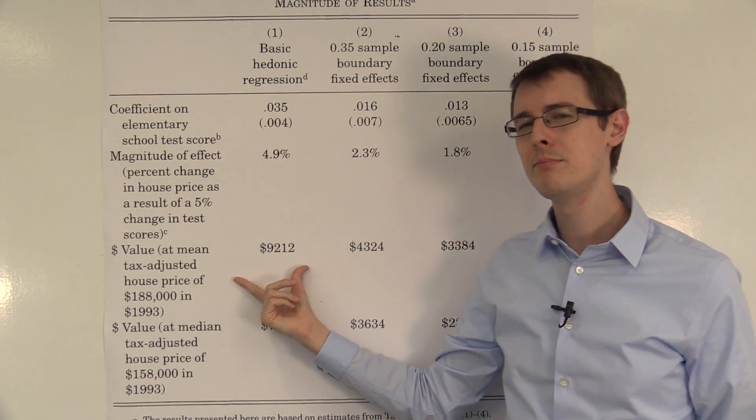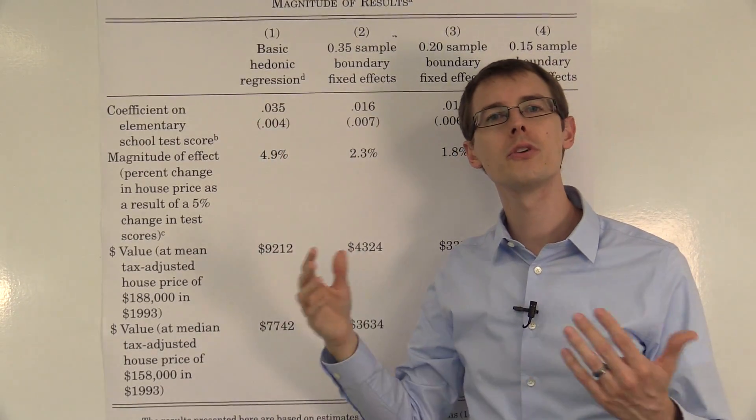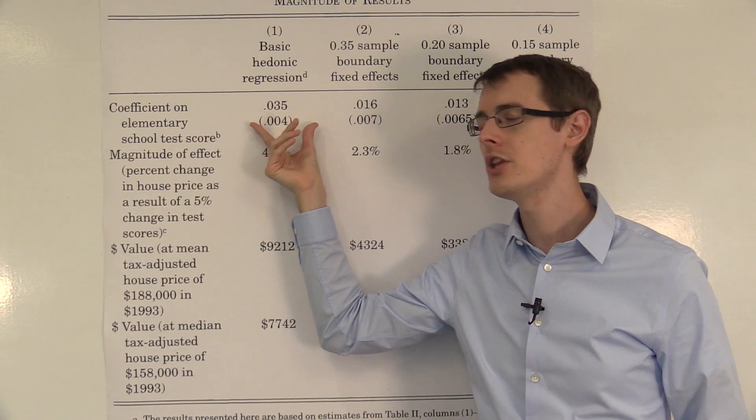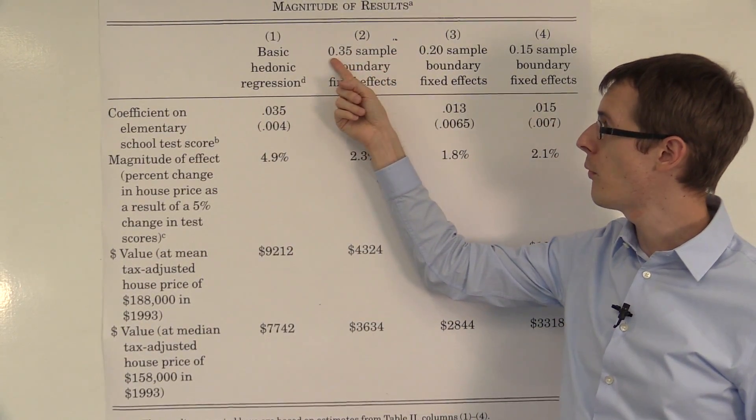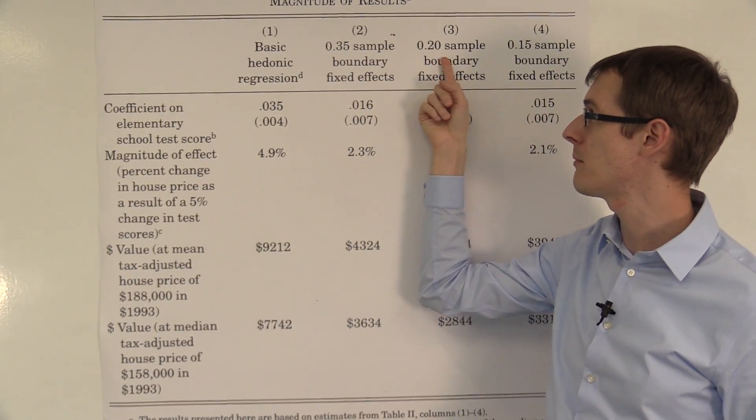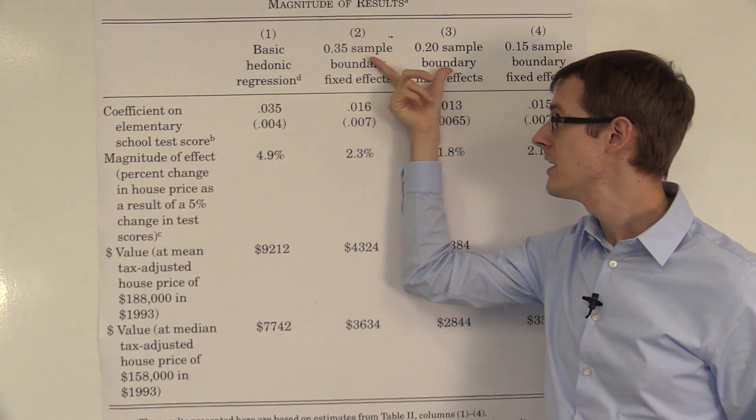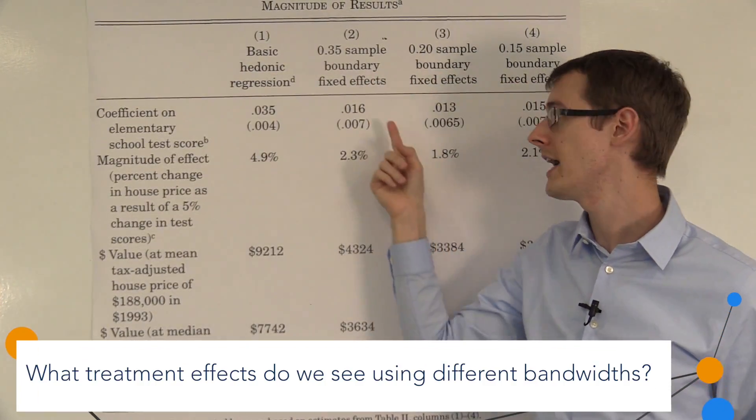But we know that we don't really believe this number because this includes all those confounding effects. We're not using the RDD idea here. Over here, you see .35 sample, that's the distance to the border, or .20 sample, that's the distance to the border. So these estimates are all using the RDD idea.